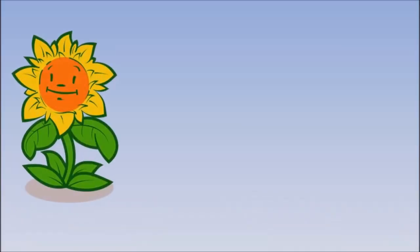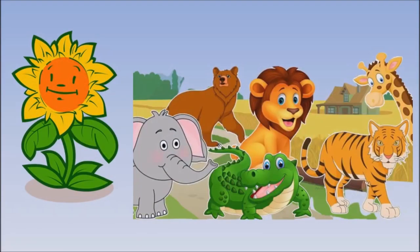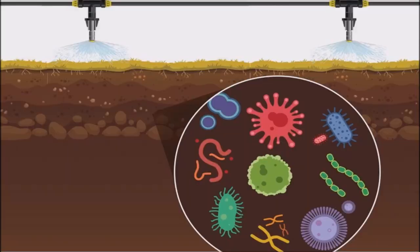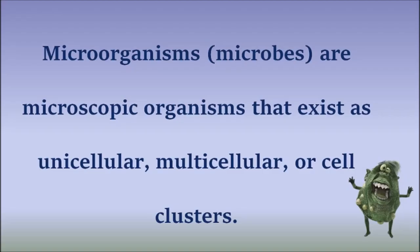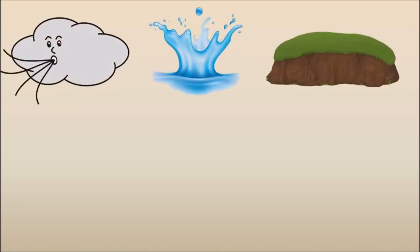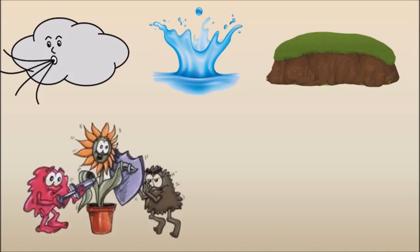Friends, we observe various plants and animals around us. However, there are some living organisms which are not visible to our naked eyes. These tiny organisms are called as microorganisms or microbes. The microorganisms are present in air, water, soil and also inside the bodies of plants and animals.